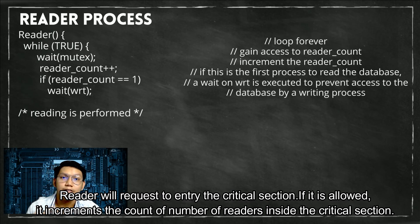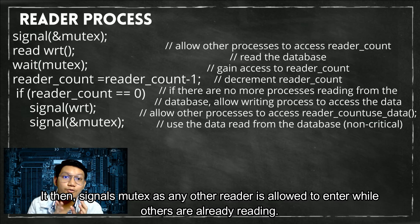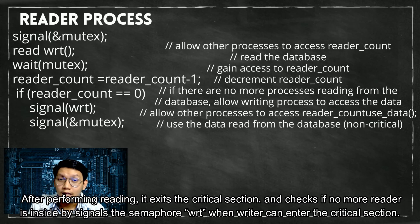Reader's process: Reader will request to enter the critical section. If it is allowed, it increments the count of number of readers inside the critical section. It then signals mutex as any other reader is allowed to enter while others are already reading. After performing reading,